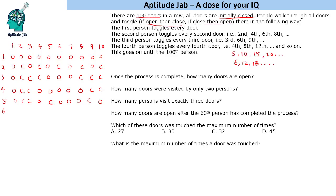From the sixth person onward, they will be toggling only one door each. The 6th person toggles only their door, the 7th person toggles only theirs, as do the 8th, 9th, and 10th persons. So we can just write the door names as they are — there is only one chain per person from here.